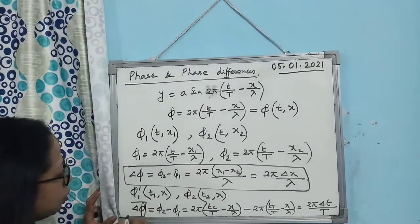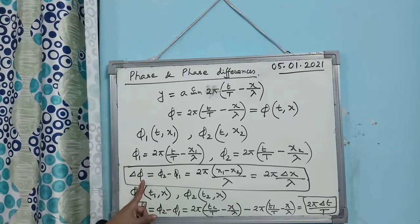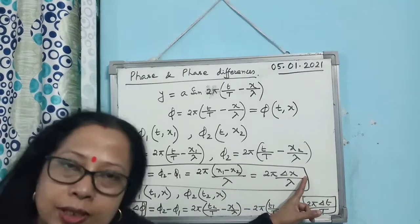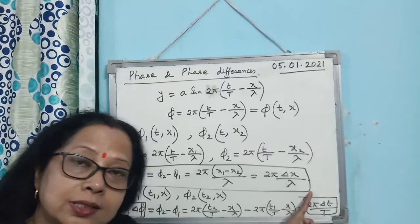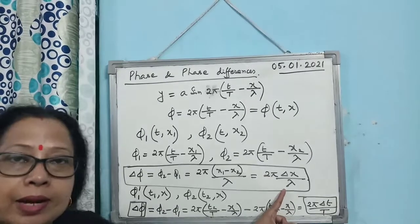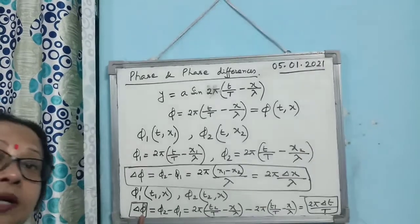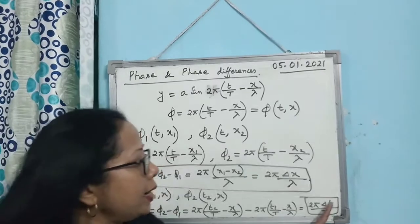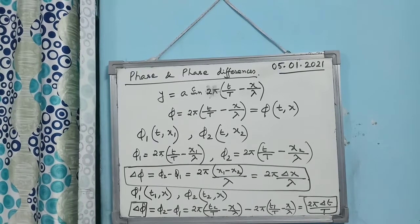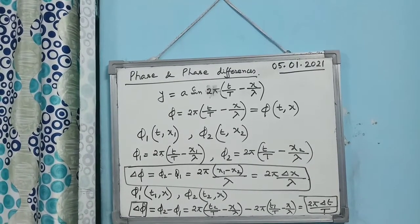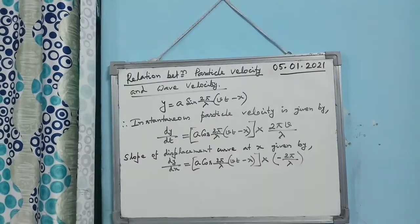So these are the two relations to remember regarding phase difference. Phase difference as a function of position: when two particles are at the same time but different positions, Δφ = 2π·Δx/λ. When two particles are at the same position but different times, Δφ = 2π·Δt/T. Remember both these relations to solve numerical problems.